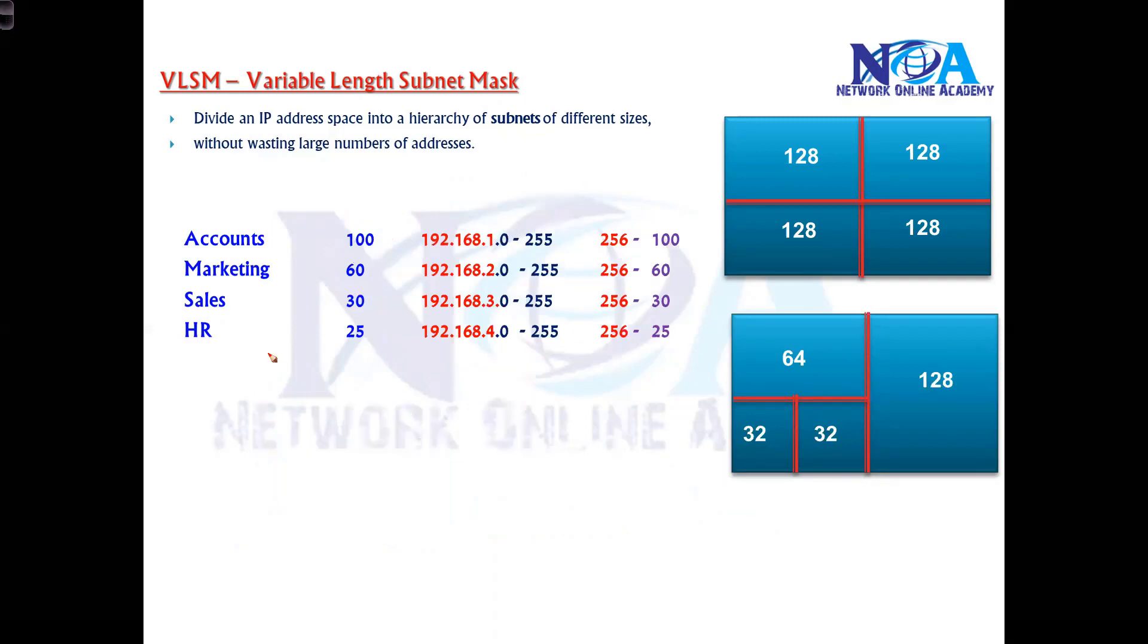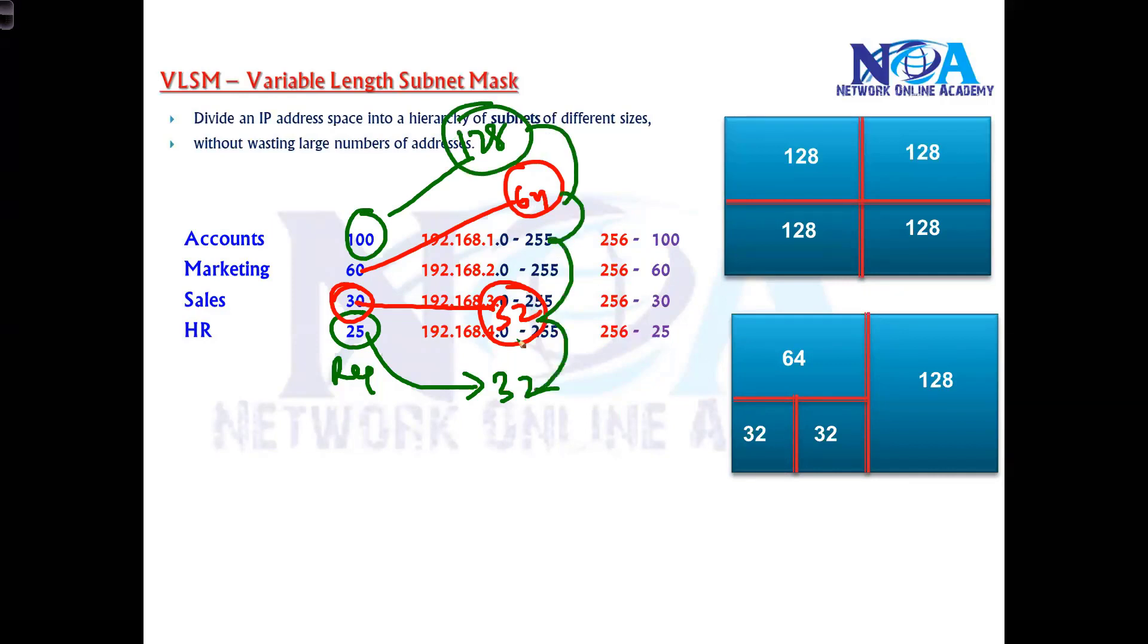In VLSM subnetting, we divide into variable sizes. Depending upon the requirement, we allocate the nearest possible size. Based on the requirement, the sizes may be the same or may not be the same.